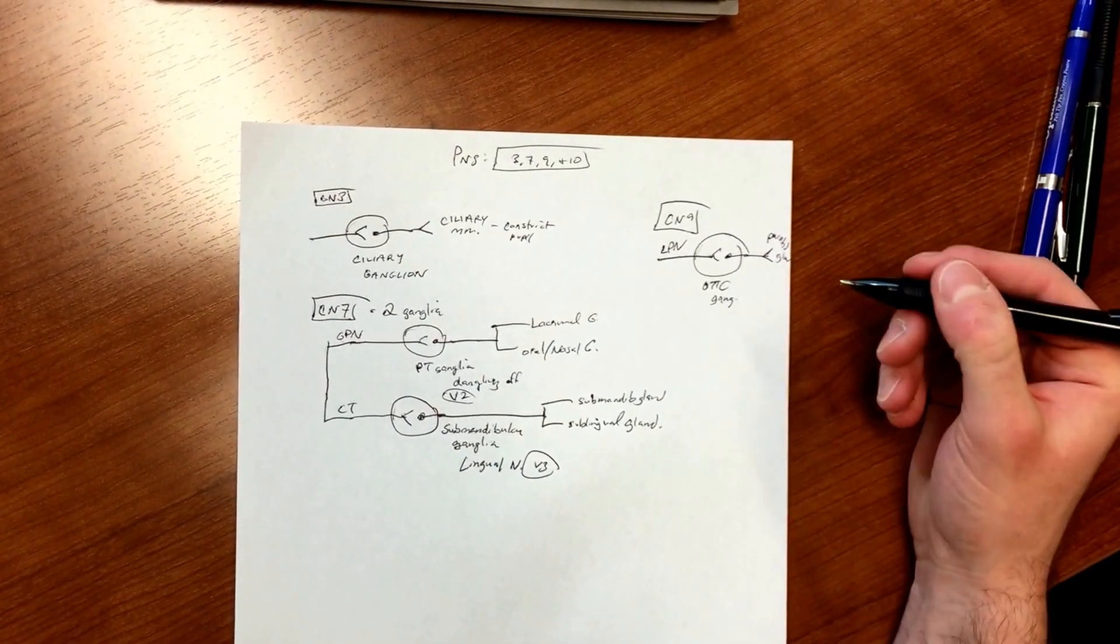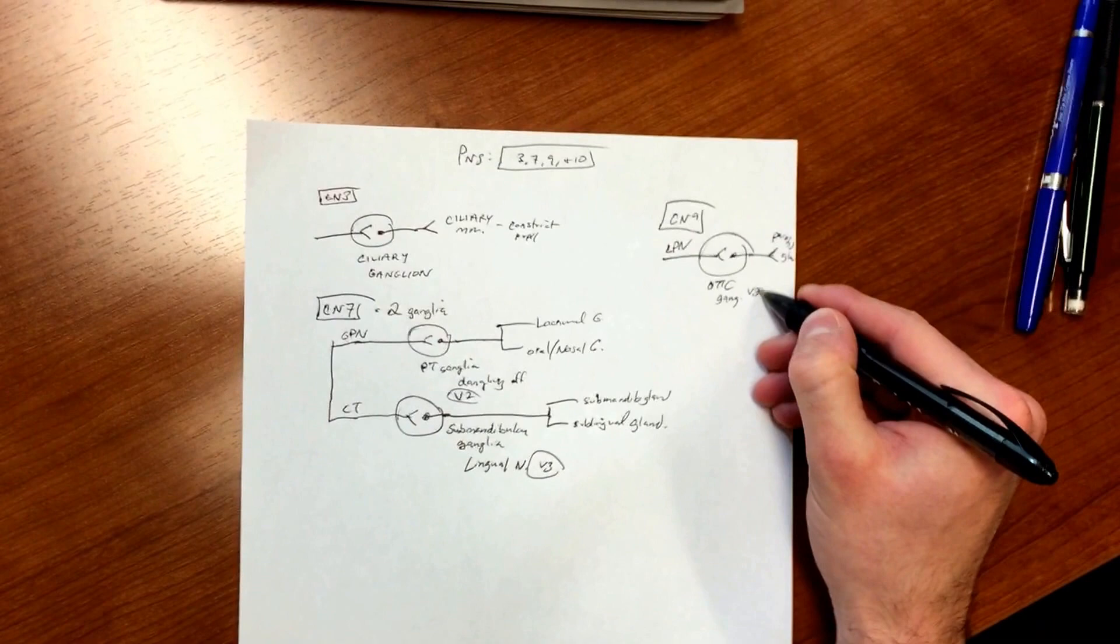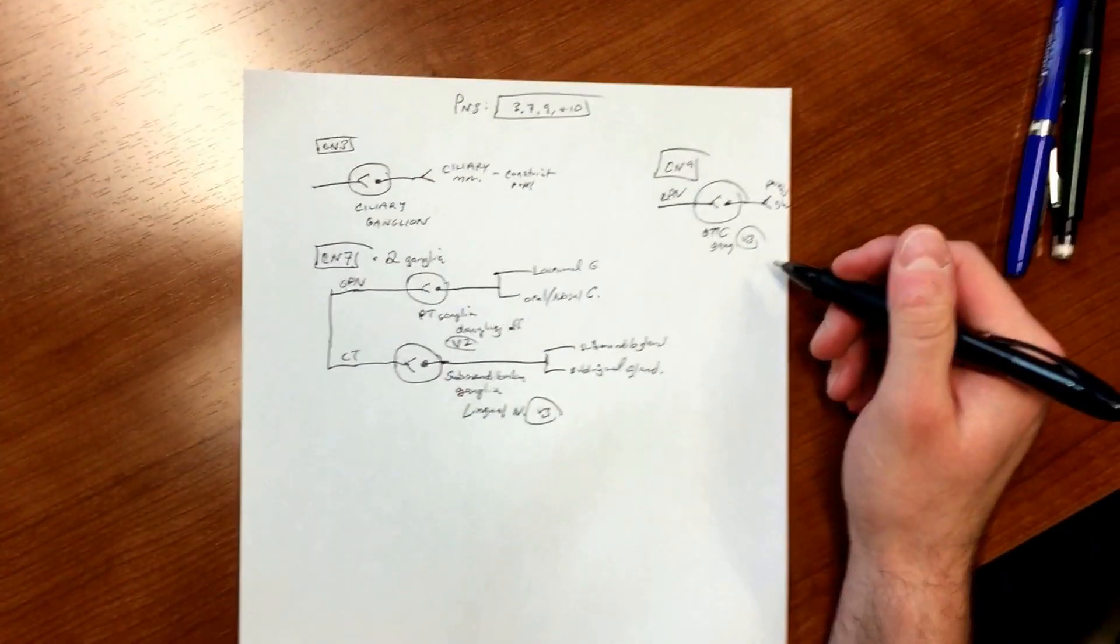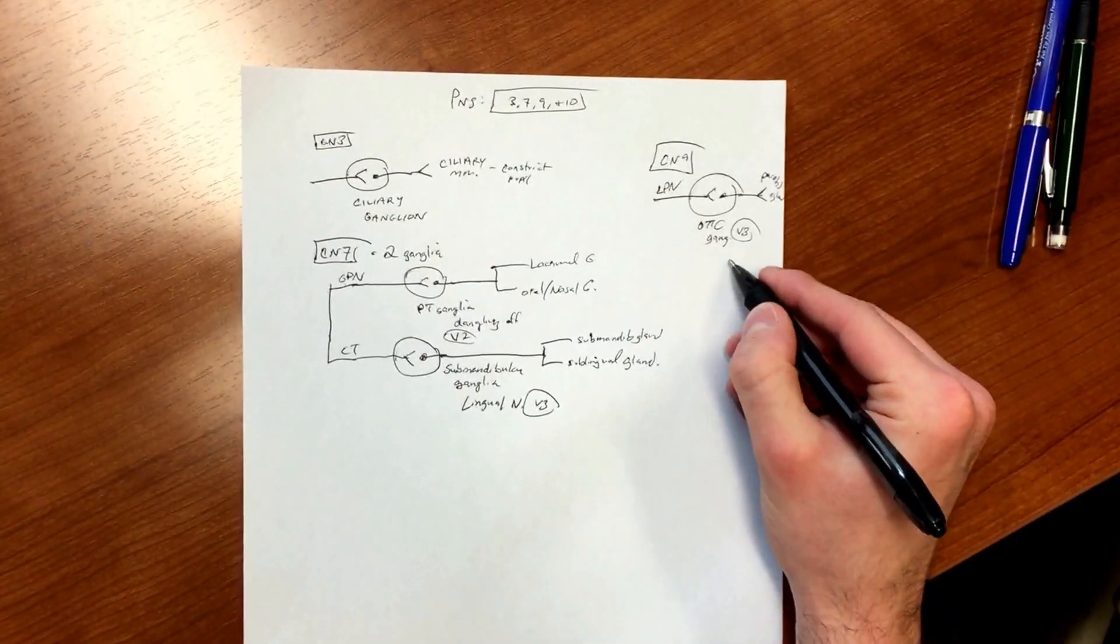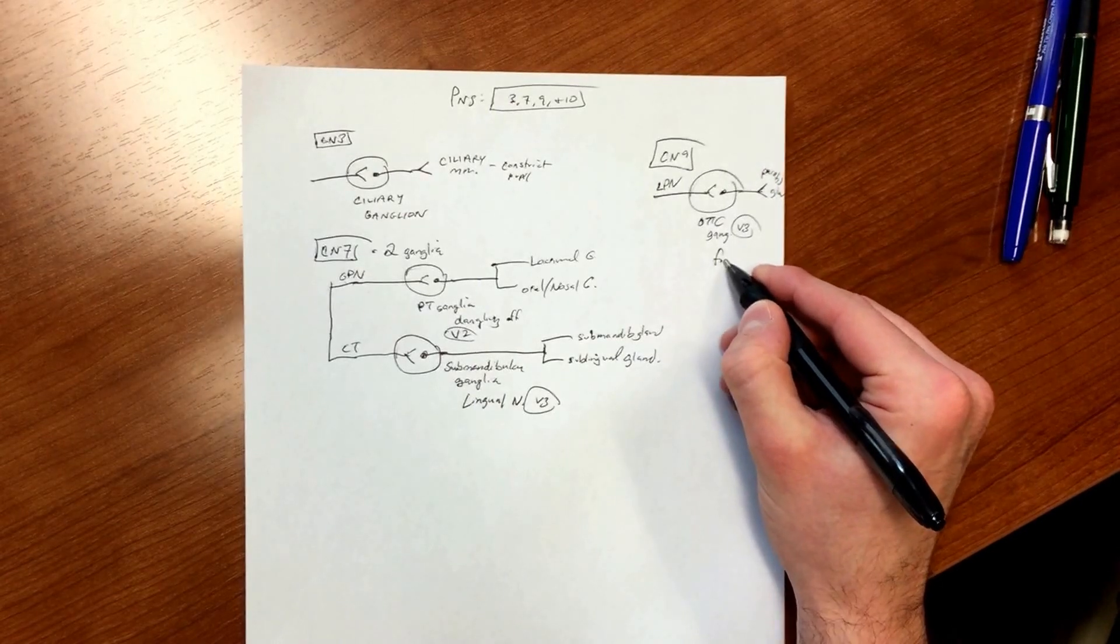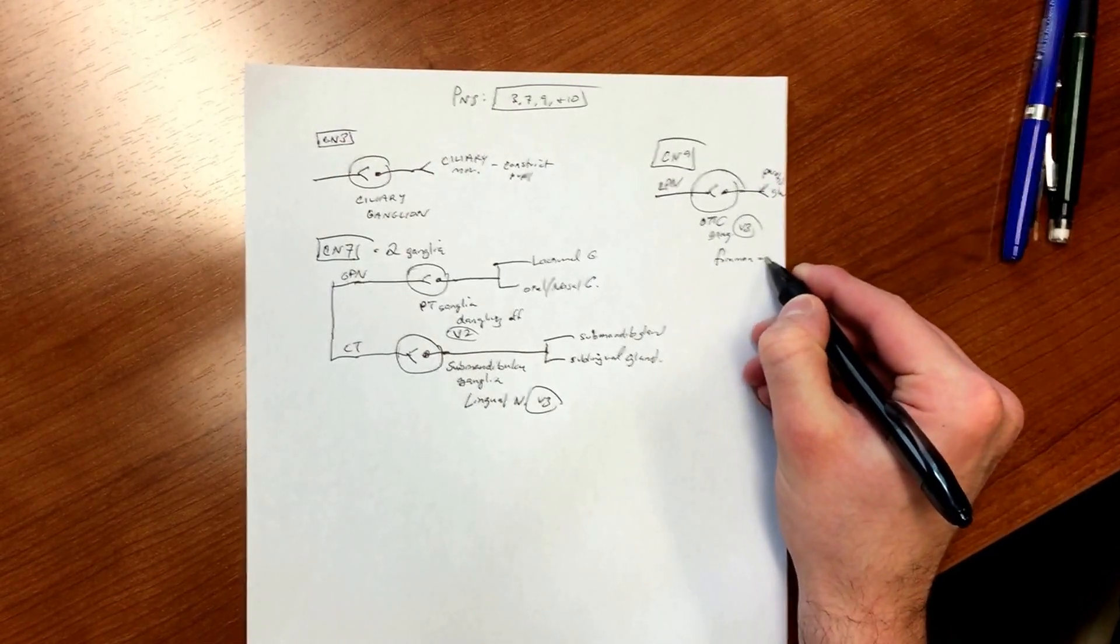And otic ganglia is associated with V3, and this will make sense in a second. V3 - just remember it's right after the foramen ovale.